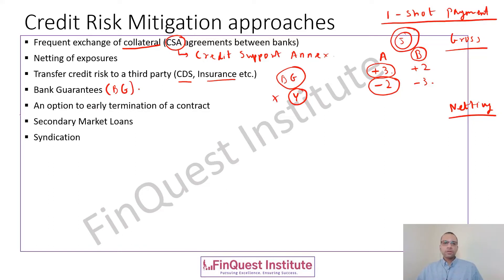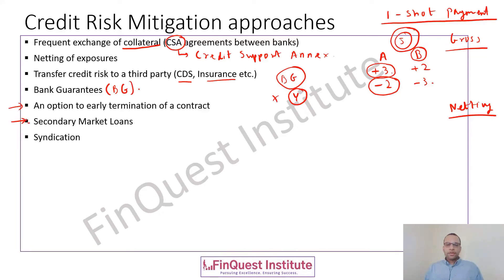Another option is early termination of the contract. At times you may have a transaction where an agreement is made by the counterparties that if a certain event occurs, there will be an option to terminate that particular transaction. Generally, as part of your term sheet, this would be clearly defined. Next is secondary market loans, which involve purchasing and selling of loans which have been originally created. This allows distribution of risk and also allows non-banking participants to take positions in such transactions.